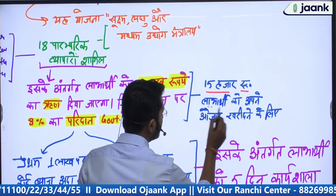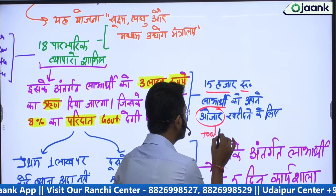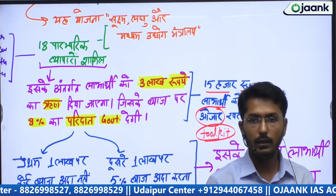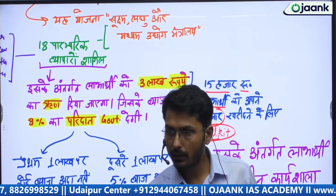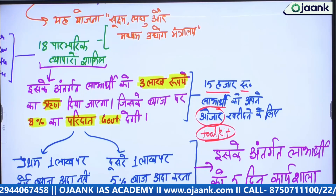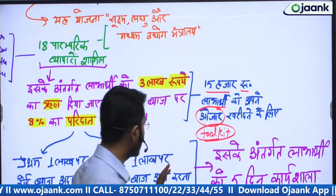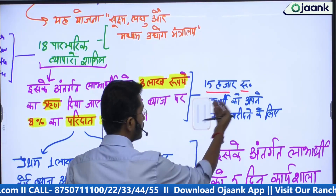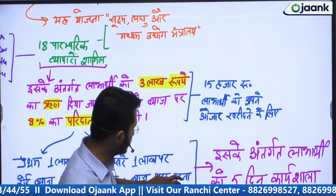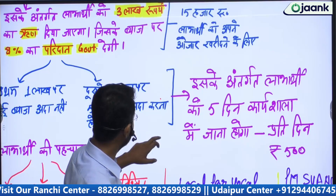Additionally, ₹15,000 will be given to the beneficiary to purchase their toolkit — that is, their tools (auzaar). A boat maker will need tools to make a boat. All these statements written here — understand that these are the statements that will appear in your prelims question. They come easily from this. If you want to study a scheme, extract its points like this, and these points can be found from newspapers.